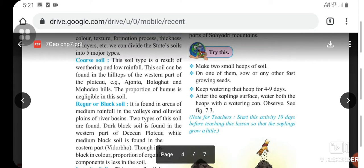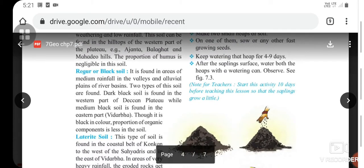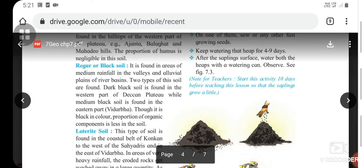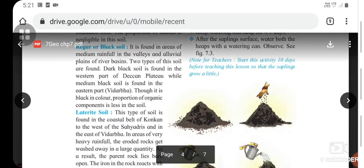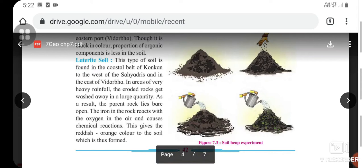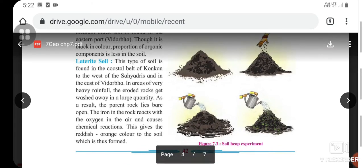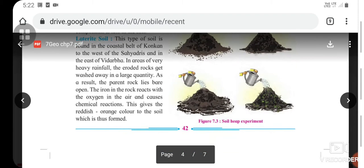There is one more activity in which you have to make two heaps of soil. On one of them, sow any fast-growing seed. Keep watering that heap for four to nine days. After the sapling surfaces, water both heaps with the watering can. There are two soil heaps, and on one the lady is putting seeds. They watered both, and you can see small plant saplings are there.